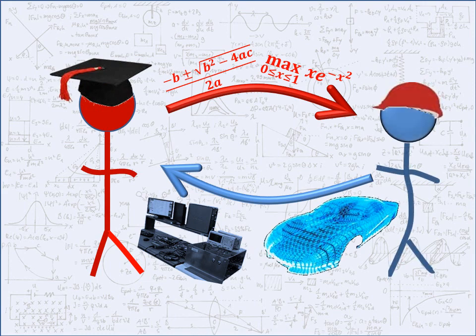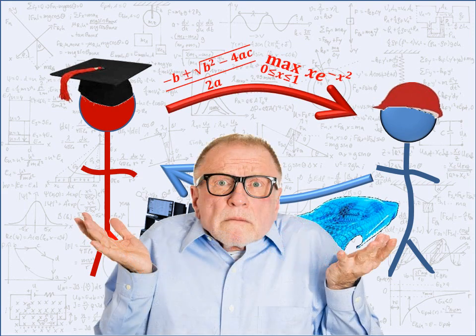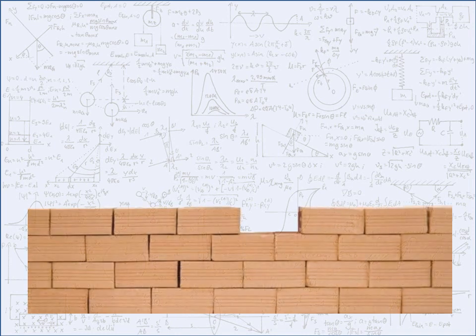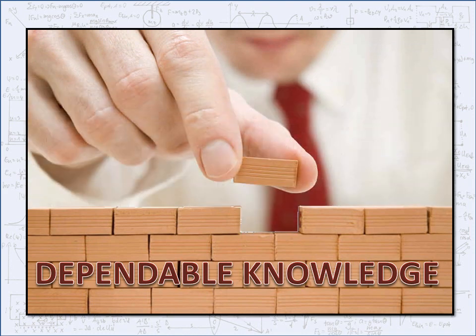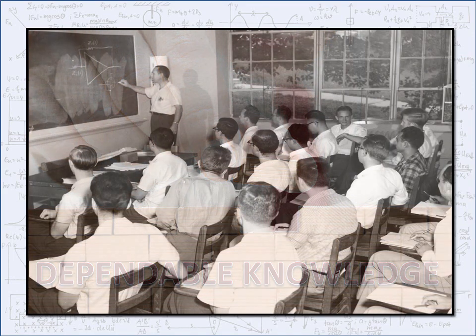Engineering has steadily produced an unprecedented string of advances. So what's the problem? These engineering strategies rely on reusing past experience that has been proven in practice — that's how you get stuff that works, the first time and every time. And in the case of teaching, that past knowledge was developed in classrooms dominated by male students.